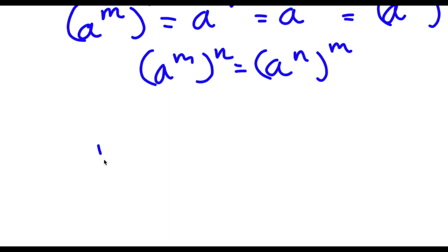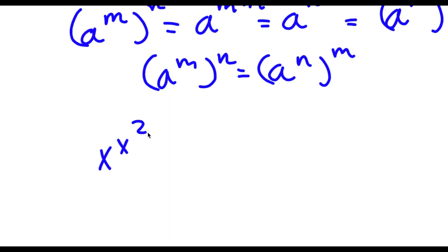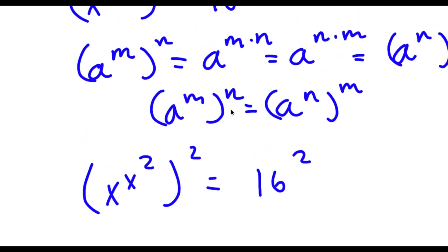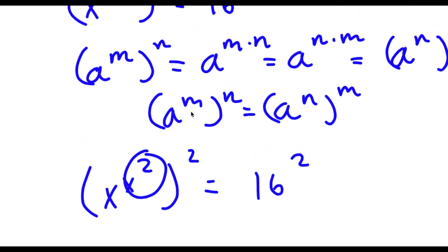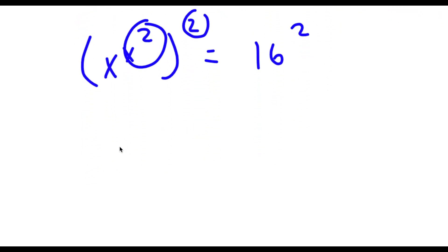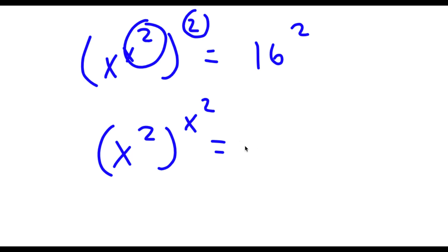So right here we have x to the power of x to the power of 2, to the power of 2, is equal to 16 to the power of 2. We can think of x to the power of 2 as m and 2 as n. So this is the same thing as a to the power of n to the power of m, meaning we swap these — I get x to the power of 2 to the power of x to the power of 2, which is equal to 16 to the power of 2.